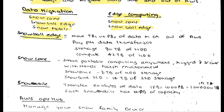What is Snowball Edge and how much capacity does it have? It can move up to terabytes and petabytes of data in or out of AWS. You can pay for data transfer. It has storage up to 80TB of SSD, and you can compute up to 42TB of SSD.